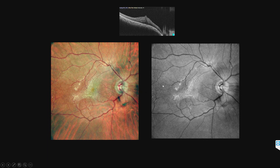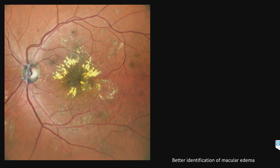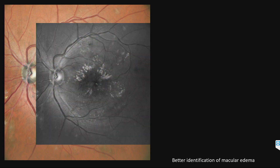In an ERM, multicolor imaging helps in better identification of the global area of involvement and also helps in identifying the edge, so you can have preoperative planning on where to start the peeling. Multicolor imaging also helps in better identification of macular edema, especially diabetic macular edema.